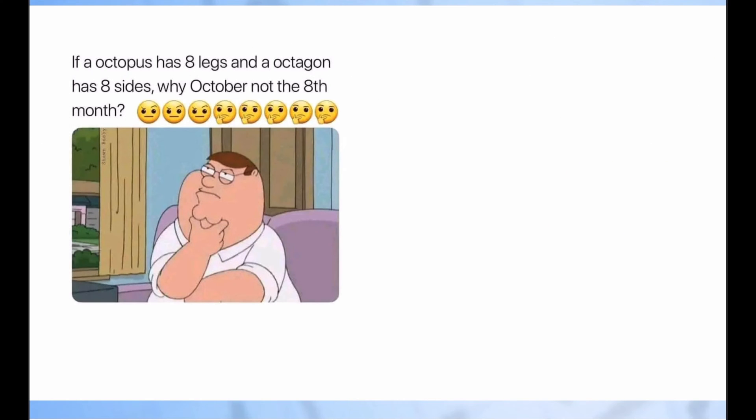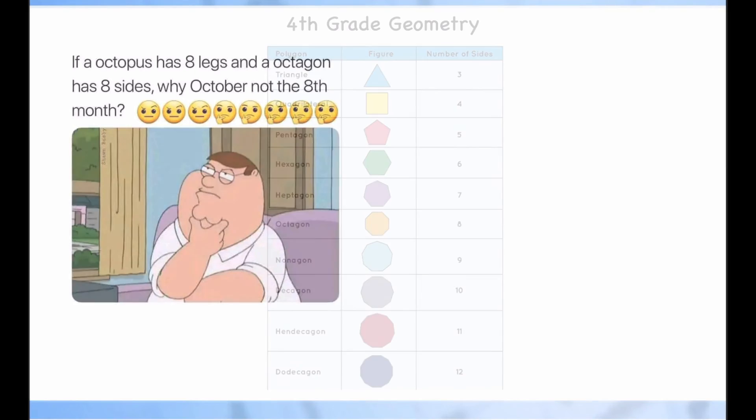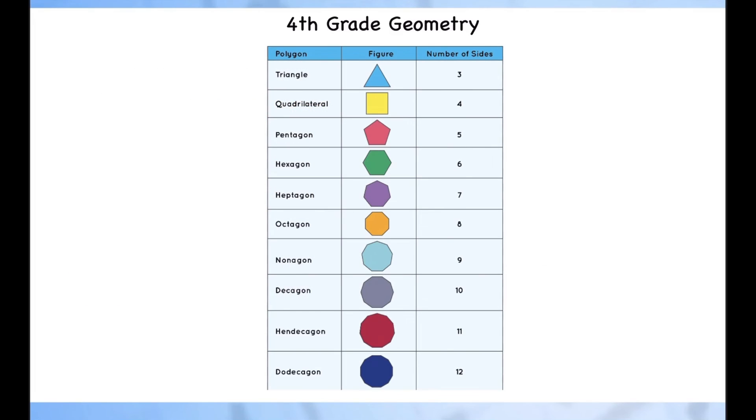Kids ask me this all the time: if an octopus has eight legs and an octagon has eight sides, why is October not the eighth month? It turns out there's a reason for this.